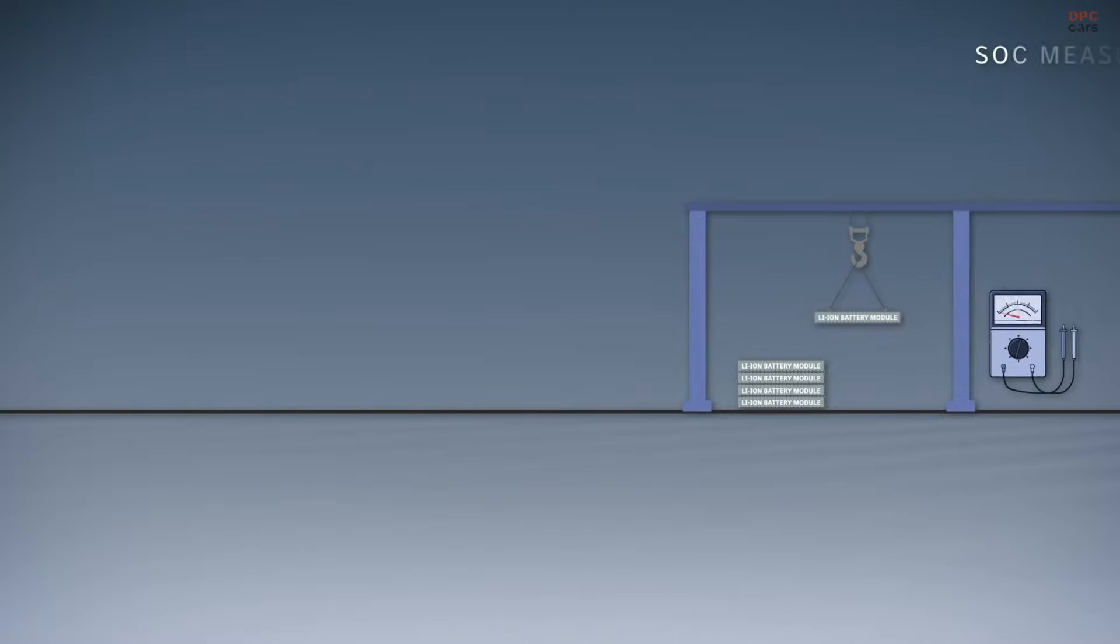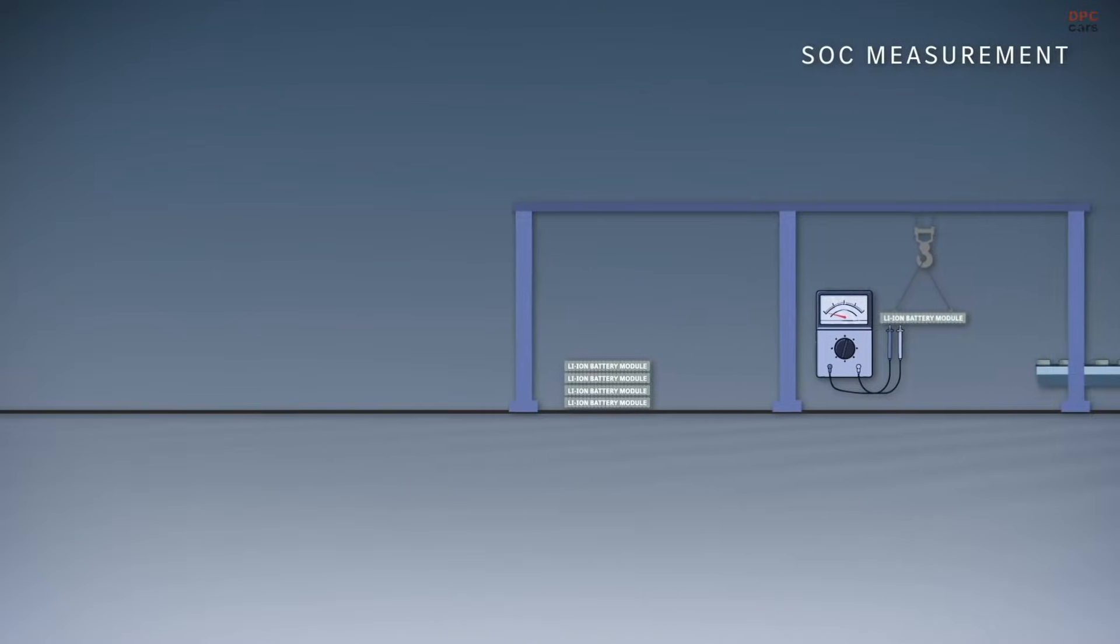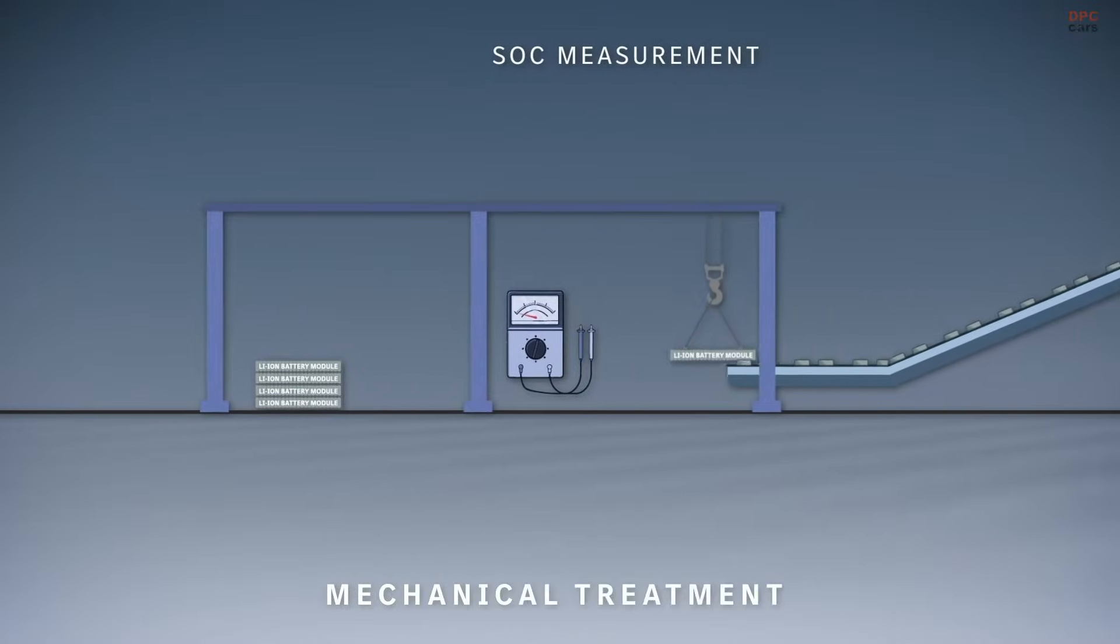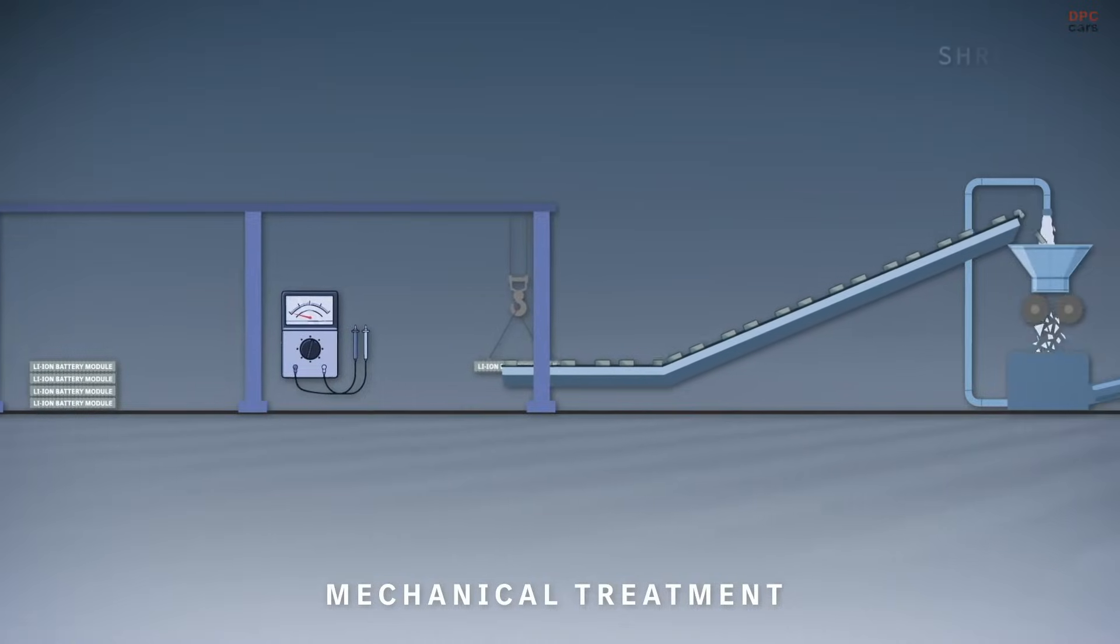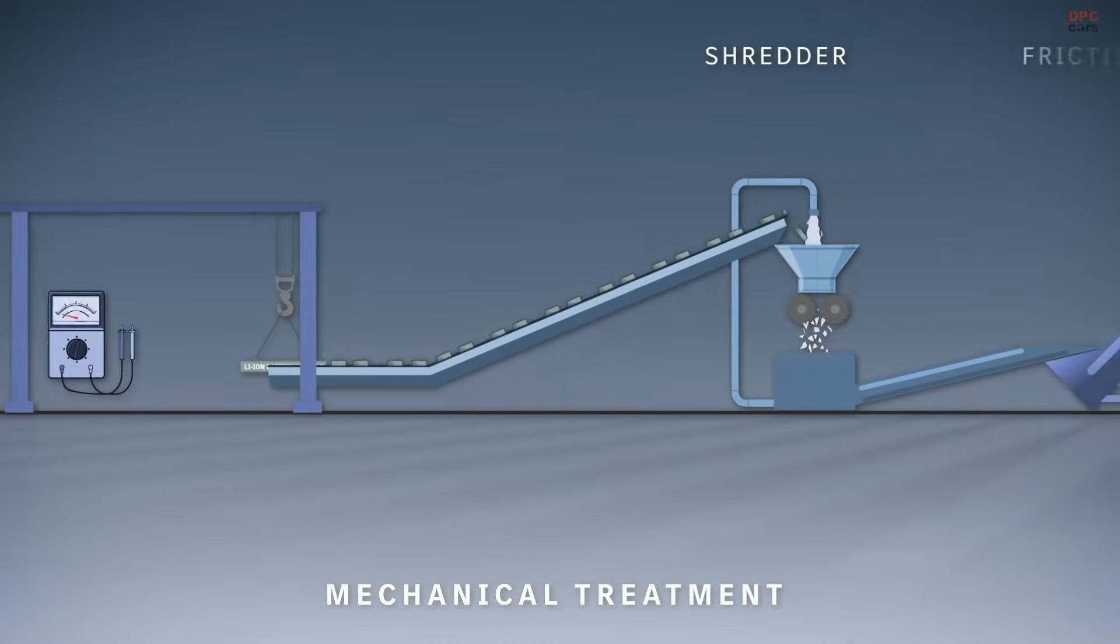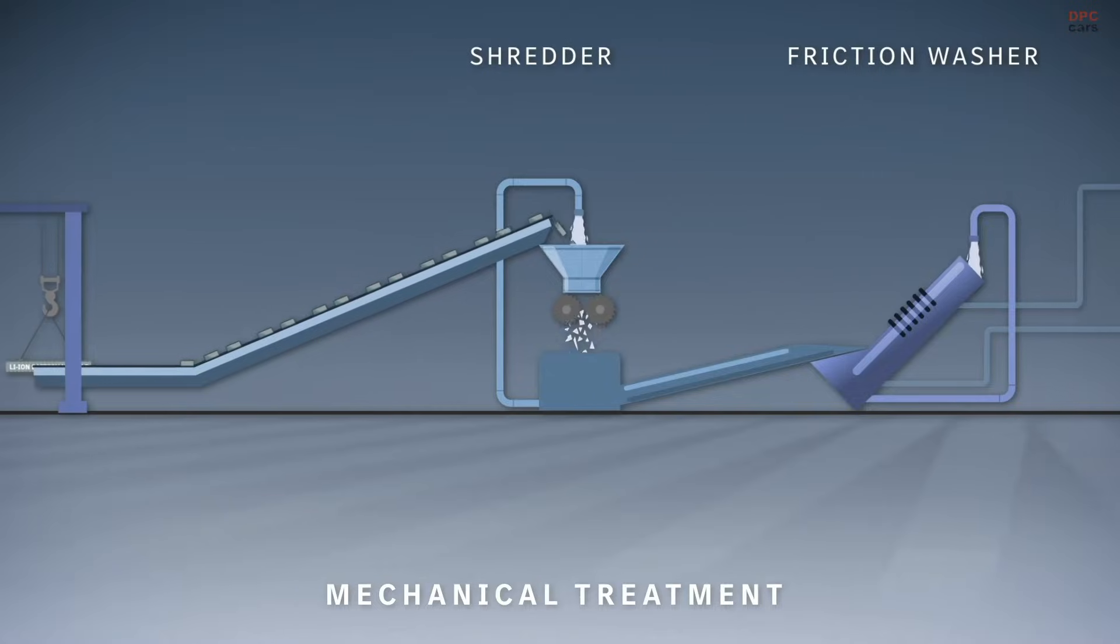After checking the state of charge, the process starts with placing the battery modules on a conveyor belt. The batteries are then mechanically crushed, washed, and separated into coarse and fine fractions.